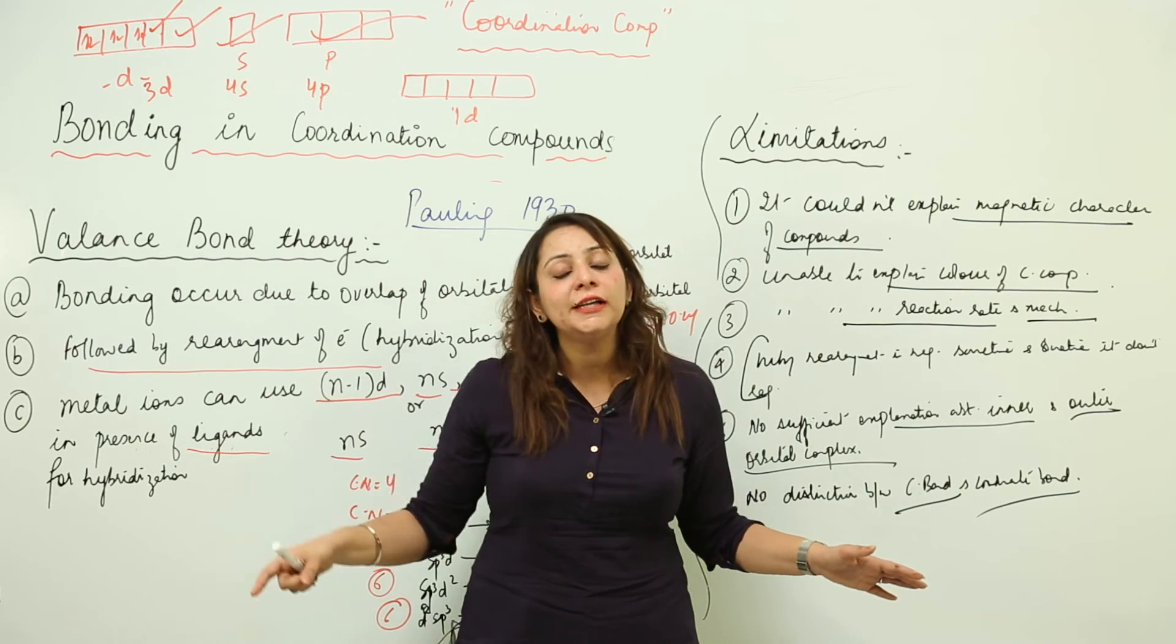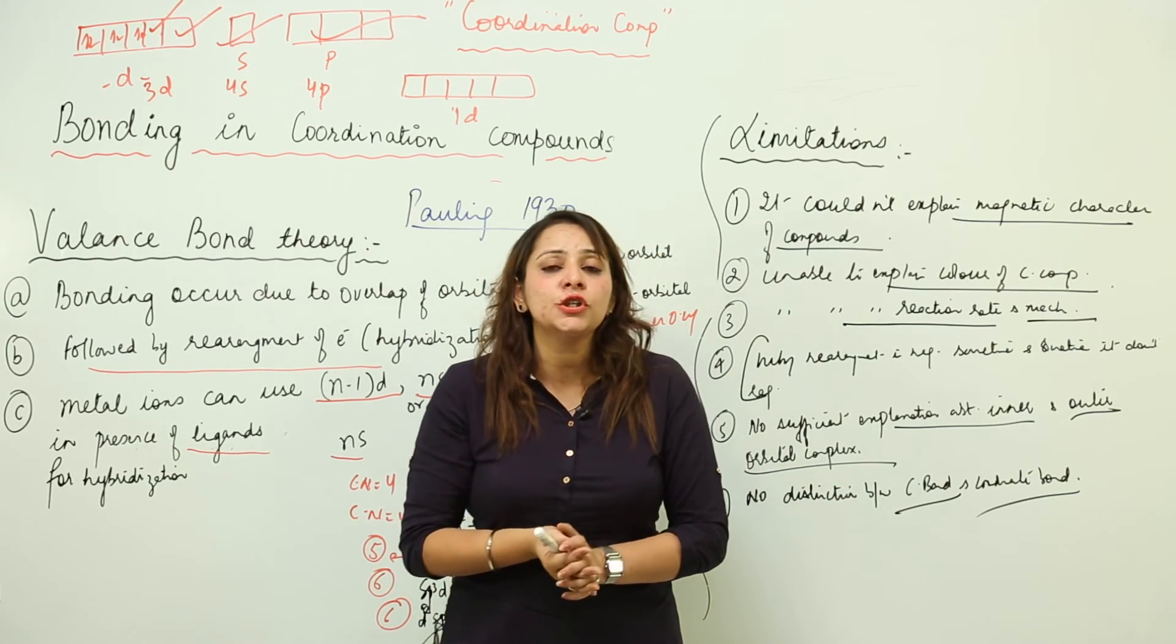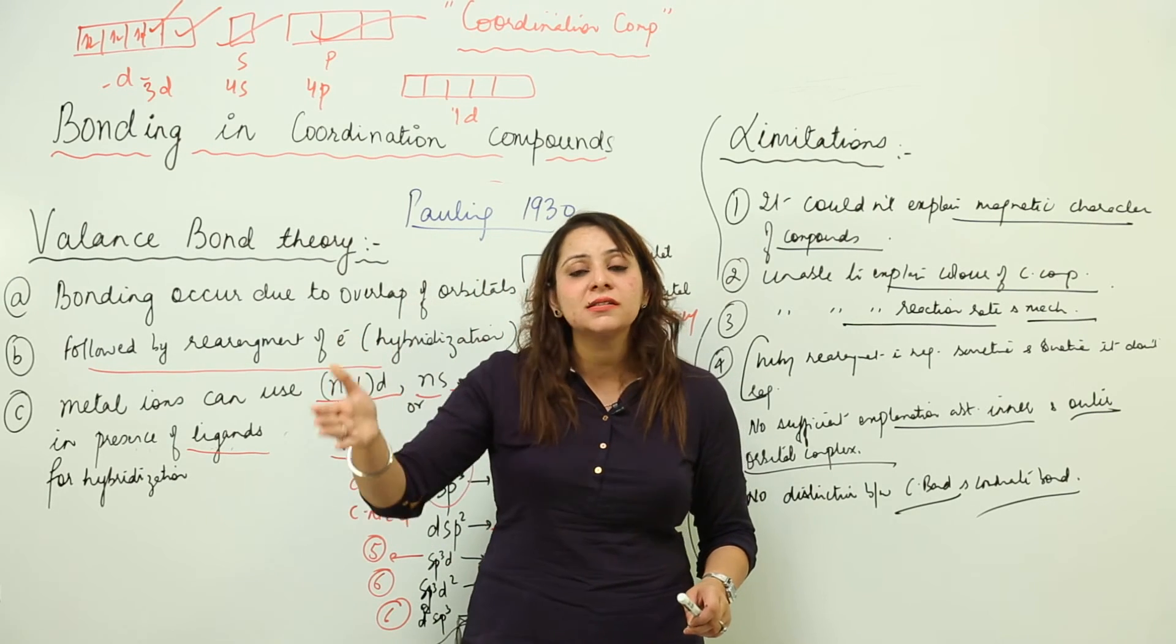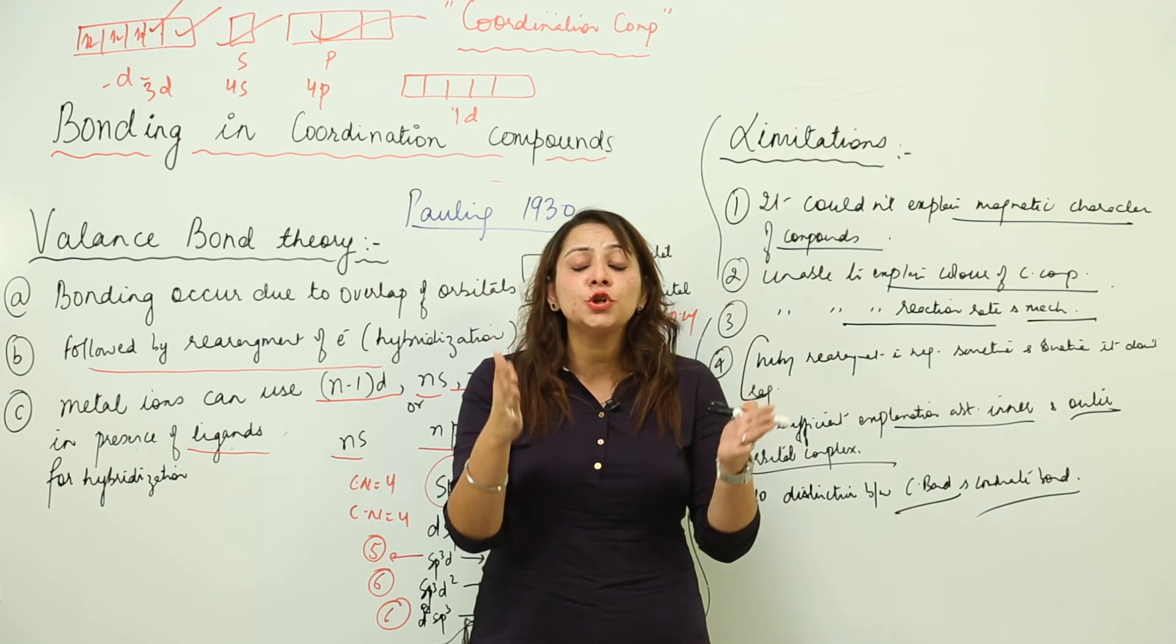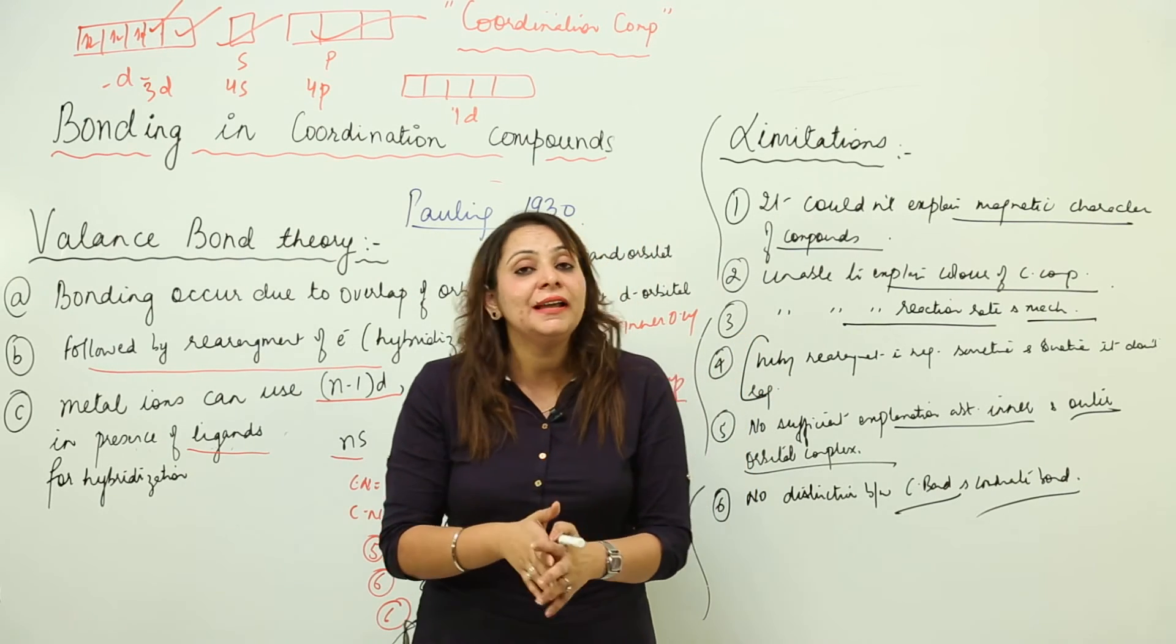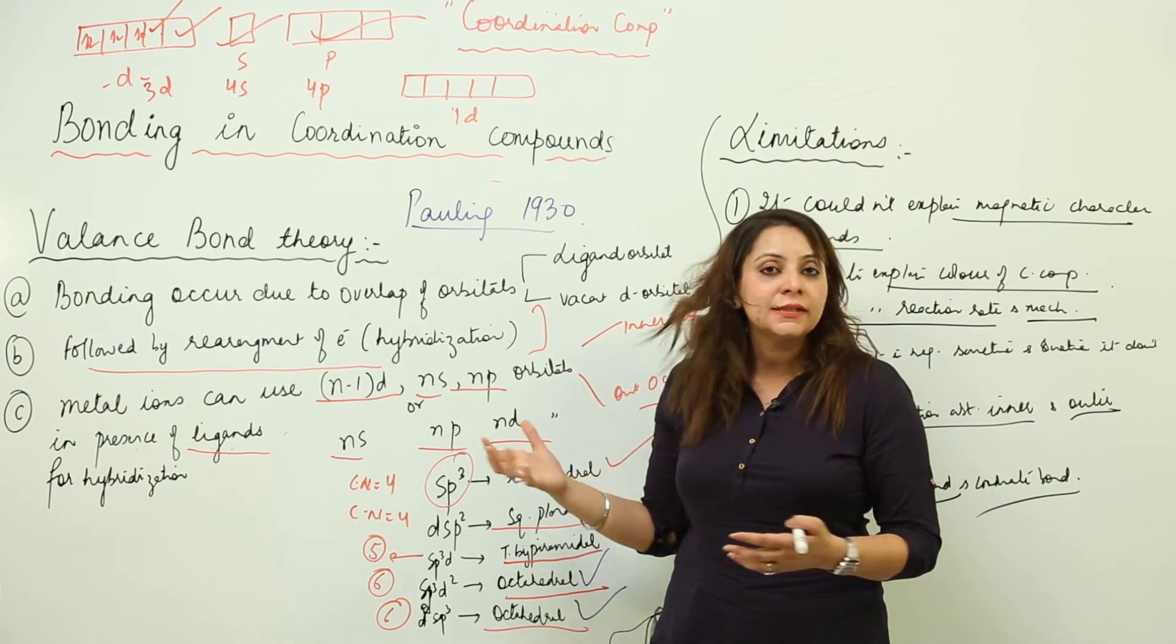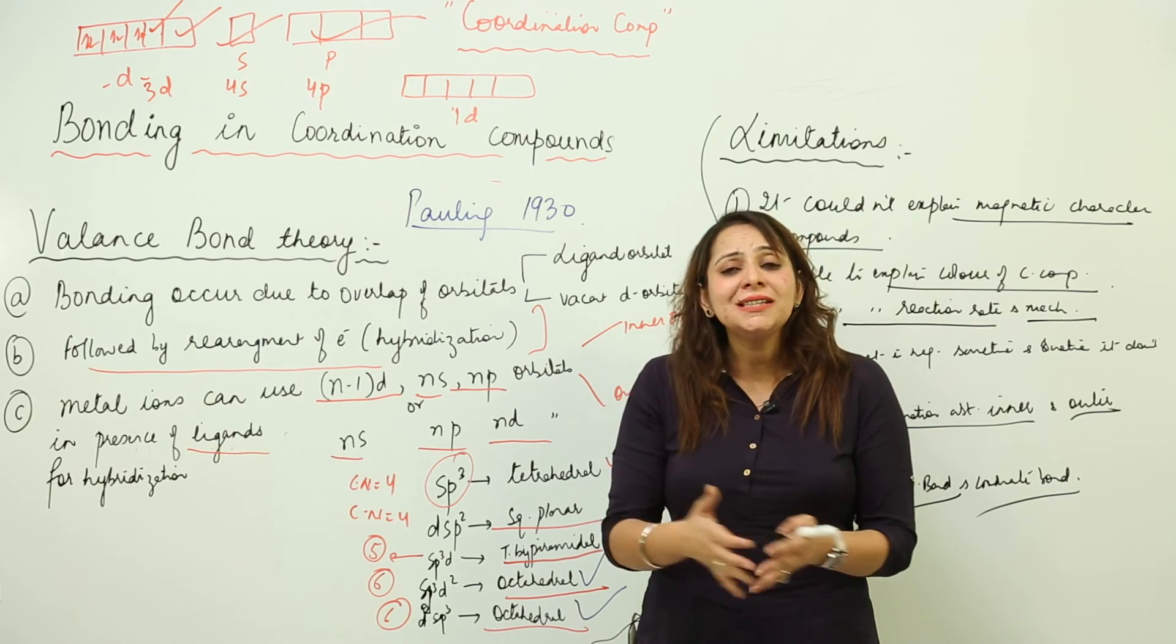But you cannot make it out whether it is a covalent or coordination bond after the formation. There should be a certain kind of distinction—just by looking at the formula we should know that in this, the coordinate bond is present or the covalent bond is present. But there is no distinction. Pauling actually told us how we can distinguish between covalent and coordination compounds. These are the few major limitations.